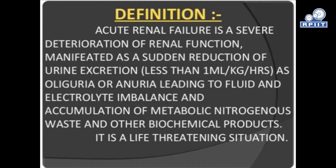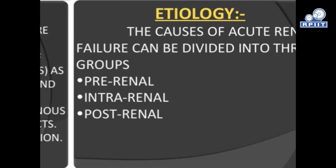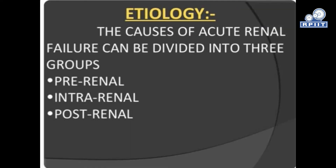It is a life-threatening situation. Etiology: The cause of acute renal failure can be divided into three groups — pre-renal, intra-renal, and post-renal.